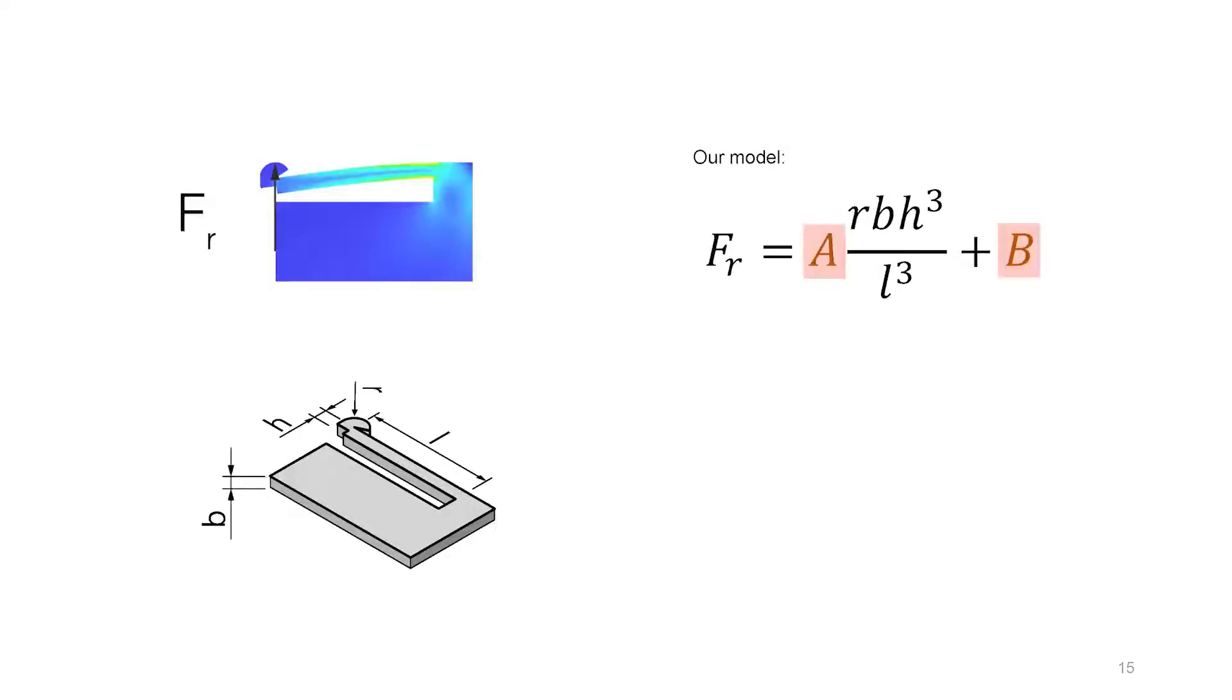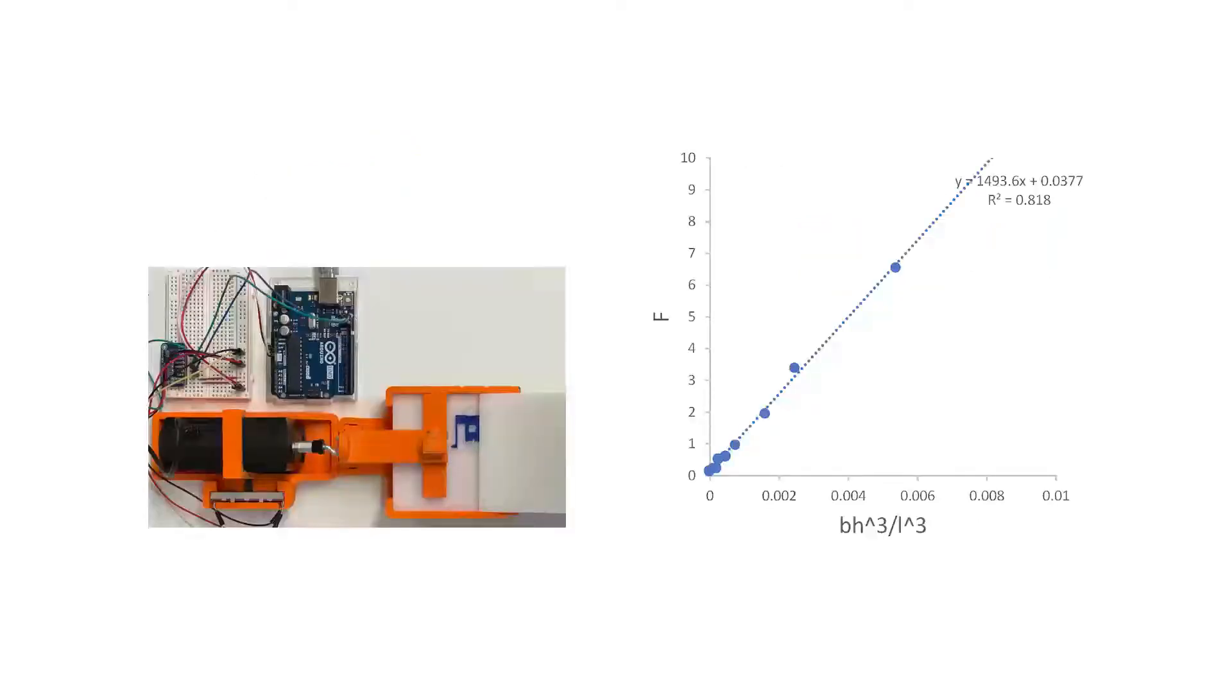We calculated A and B and evaluated how well the mathematical modules predict modules using linear regression. Still using linear resistance module as an example, we generated a series of geometries by varying L, B, and H, and measured the reaction forces from the geometries. We conducted linear regression using B times H cubed divided by L cubed to predict F, in order to obtain A and B to complete the equation, and R squared to measure the percentage of the variance in the reaction force that can be predicted with the geometric variable.